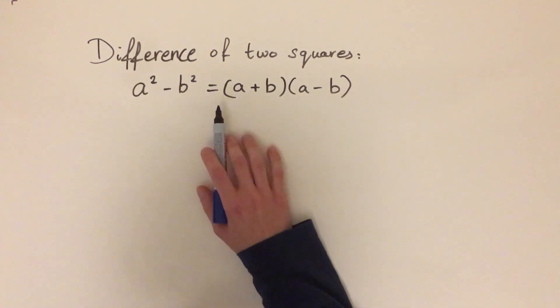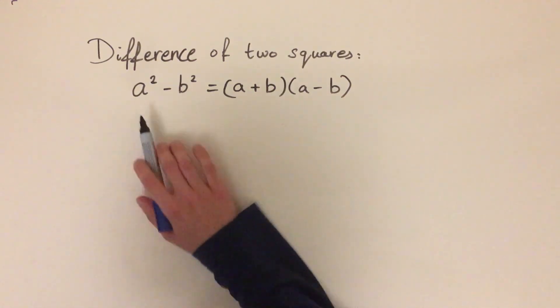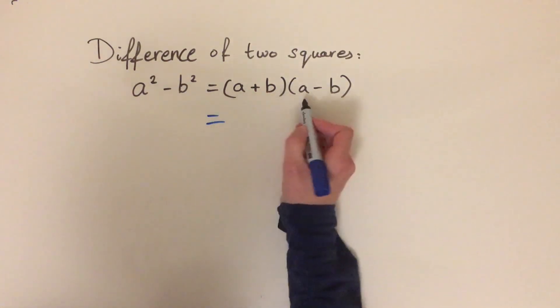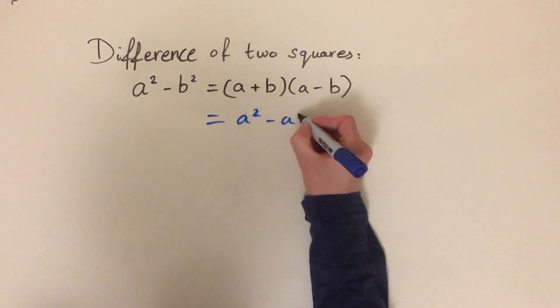So firstly let's check it's correct, let's expand the right hand side out and make sure it lines up with the terms on the left hand side. So if we expand this out we get a times a is a squared. a times minus b is minus ab.